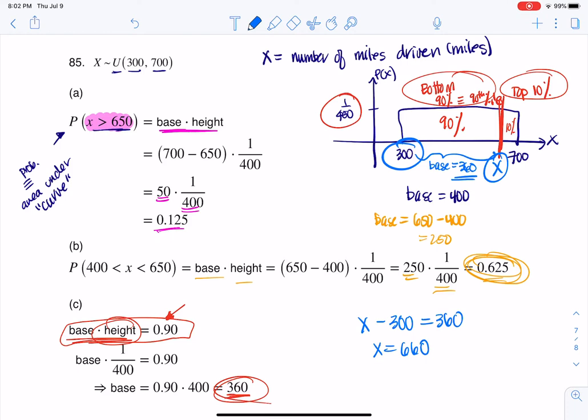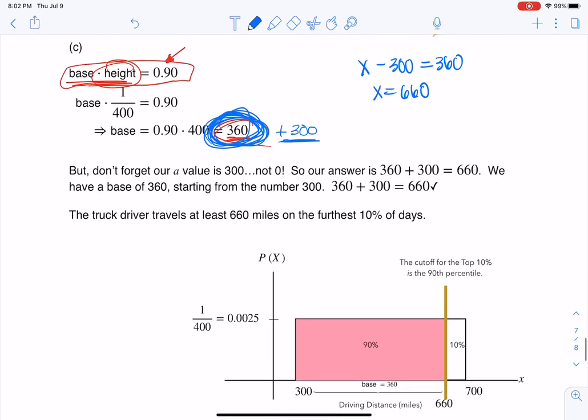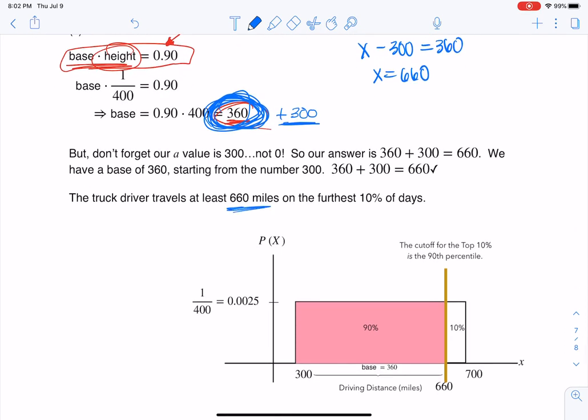So really, x is 660. And I think maybe just an easier way to do that is whatever you find your base to be, in this case, it's 360, add your minimum to it. Because you need to be 360 units away from your starting point of 300. So really, what you're looking at here is that the truck driver travels at least 660 miles on the furthest 10% of the days. All right. Thanks so much, everyone. Bye.